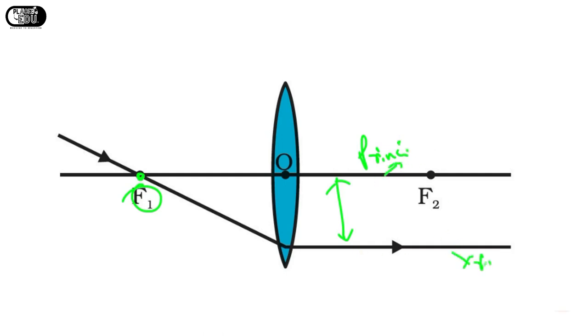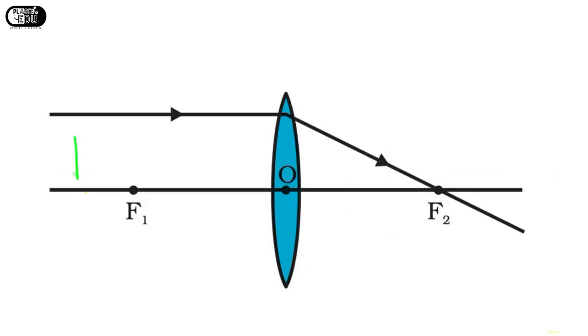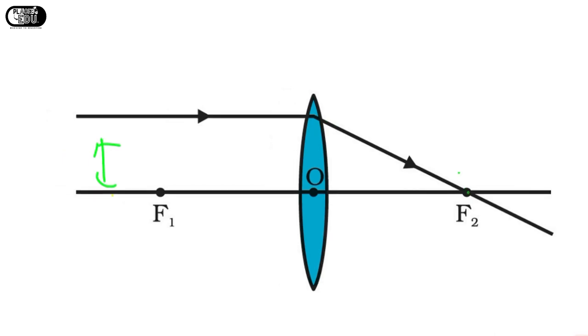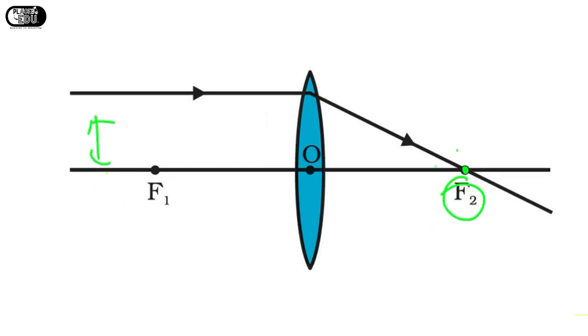So this is the ray which is parallel to the principal axis. And the next point: if the light ray is parallel to the principal axis, after refraction it will be like that. It will pass through the focal point F2.